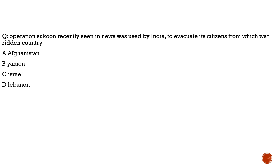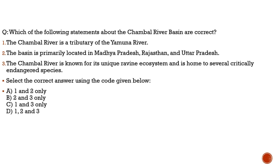The next question asks: Operation Sukun, recently in the news, was used by India to evacuate its citizens from which war-torn country? The answer is Lebanon — option D. This operation was conducted in 2006 using the Indian Navy to evacuate Indian citizens from Lebanon. It is relevant today because Israel has started war with Lebanon, which may escalate, and approximately 3,000 Indians are currently staying in Lebanon, making evacuation a possibility.